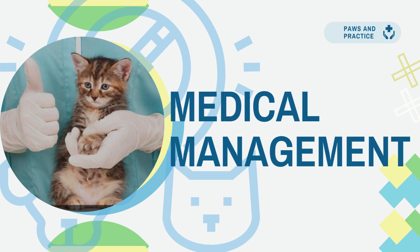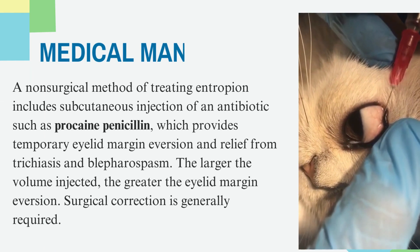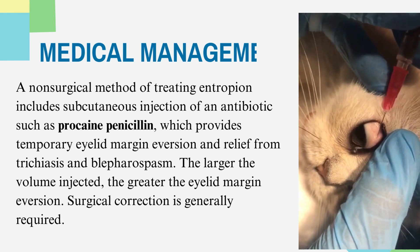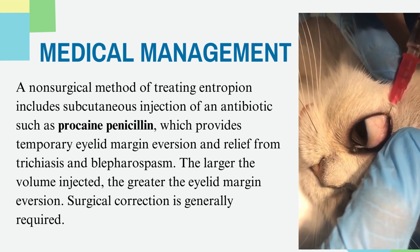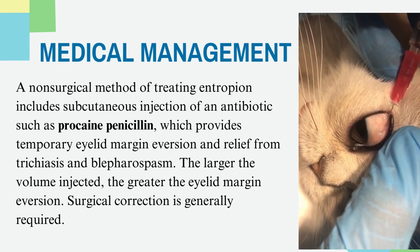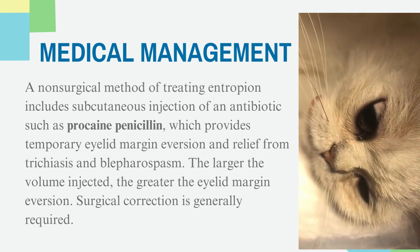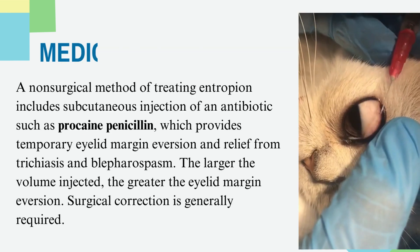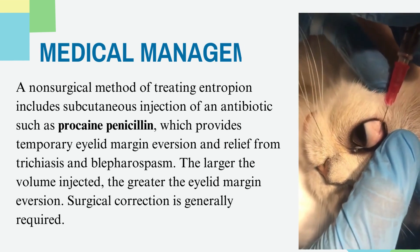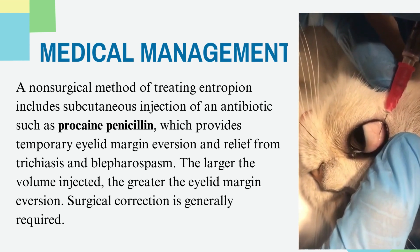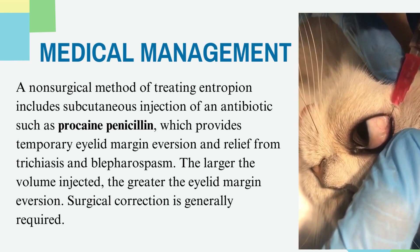A non-surgical method of treating entropion includes subcutaneous injection of an antibiotic such as procaine penicillin, which provides temporary eyelid margin eversion and relief from trichiasis and blepharospasm. The larger the volume injected, the greater the eyelid margin eversion.